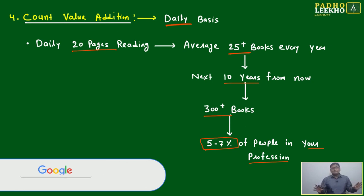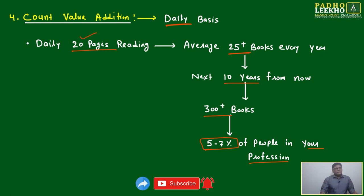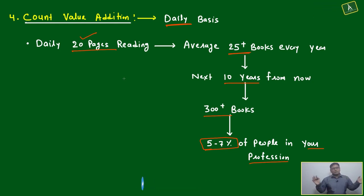If for 10 years, every year, you are reading 25 plus books, or daily you are adding small value—20 pages daily, 20 pages daily, 20 pages daily—just you read for 10 years, you will be differentiated in your profession. You will become in the top five to seven percent of people in your country, or in this world, in your profession.